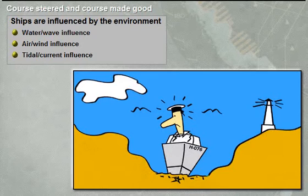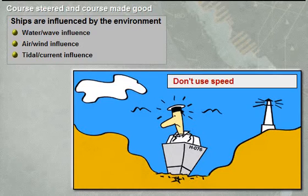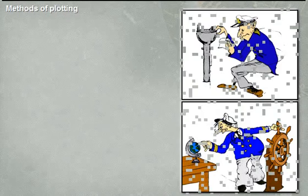Basically, there are two methods of plotting: true motion and relative motion. Both plotting methods can supply the information required. Which method is selected depends on the preferences of the navigator.